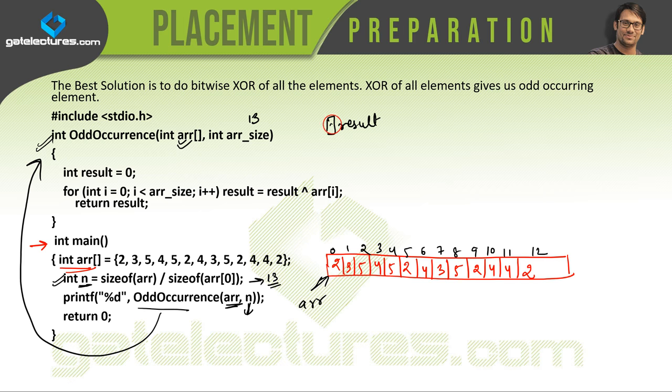Now we are maintaining a variable which is result, which is storing a value of 0. Remember one thing as I told you: if you do A XOR 0, or 0 XOR A, that will give you the number A itself.